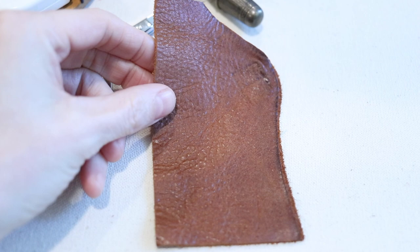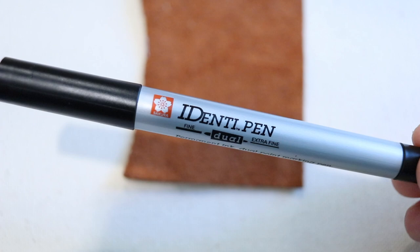So start by taking your leather and a marking pen. The pen is going to be used to trace around your finger on your dominant hand so your thimble will fit snugly when stitching.